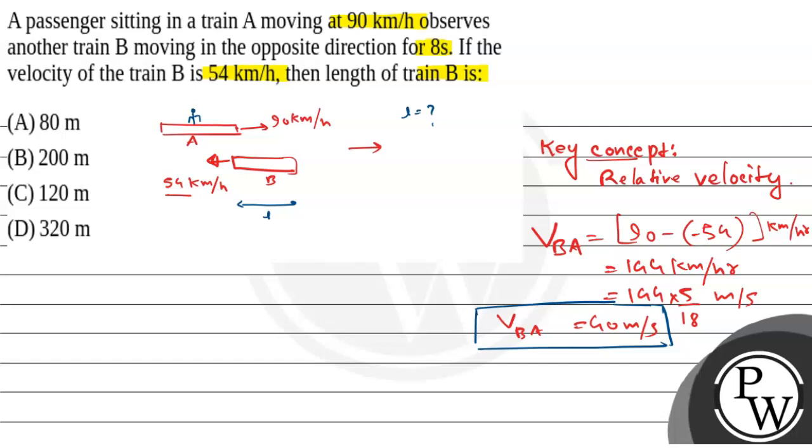Now, length equals what? We know that length equals velocity into time. This velocity is the relative velocity, and time is 8 seconds. So the length of the train will be 40 into 8 meters, that equals 320 meters.